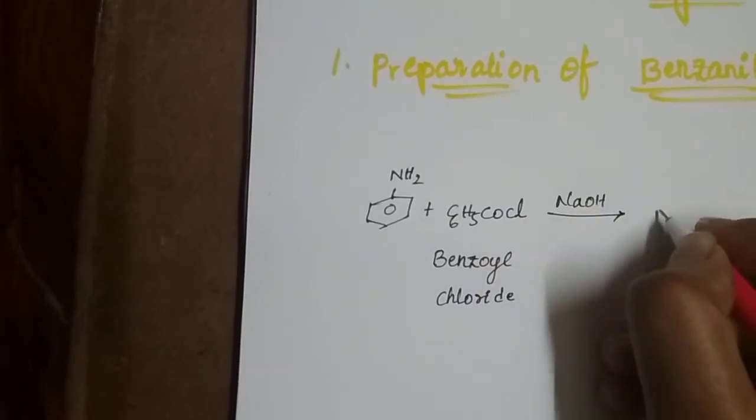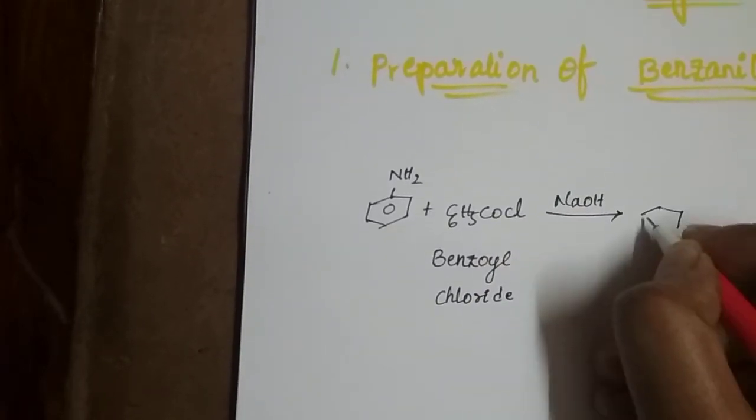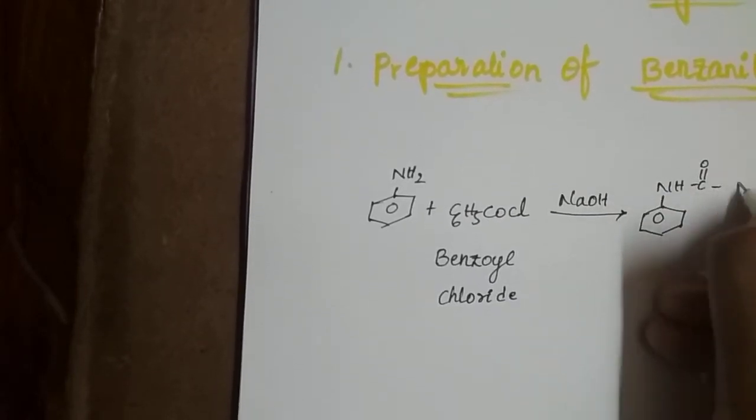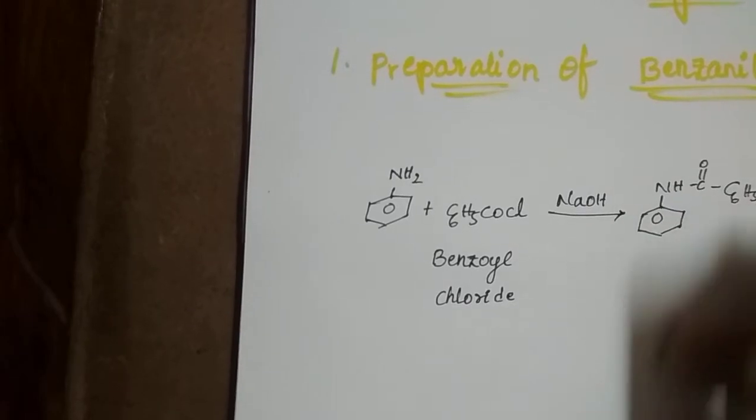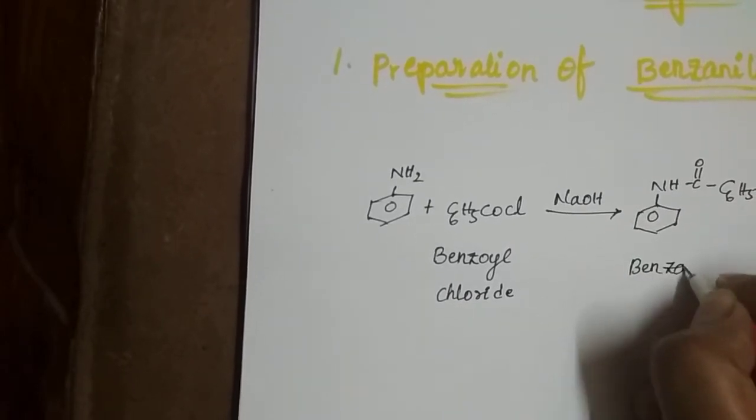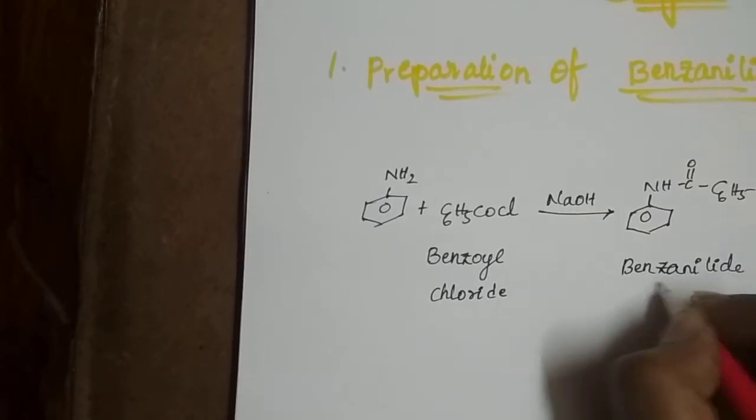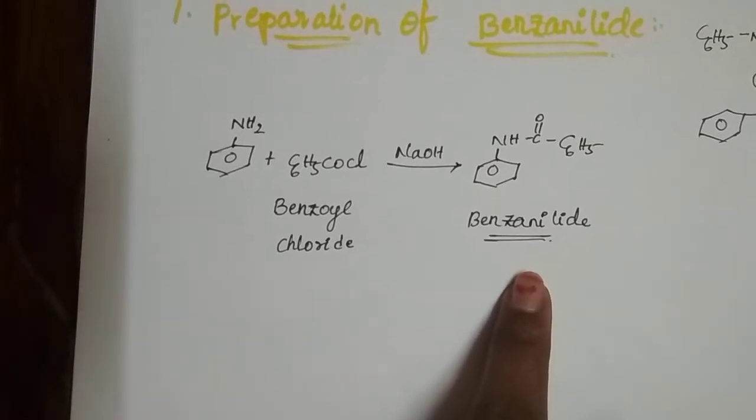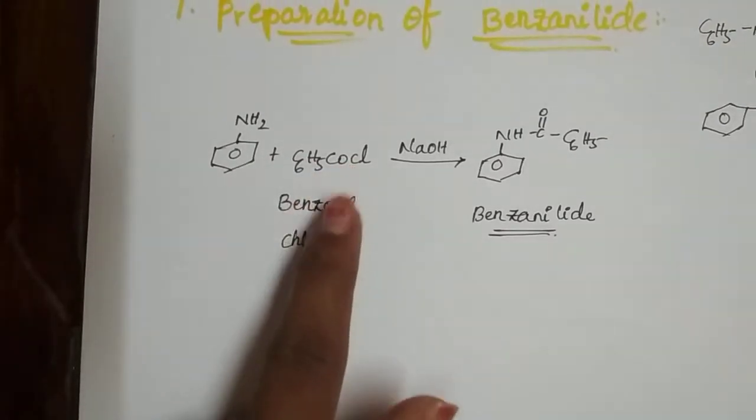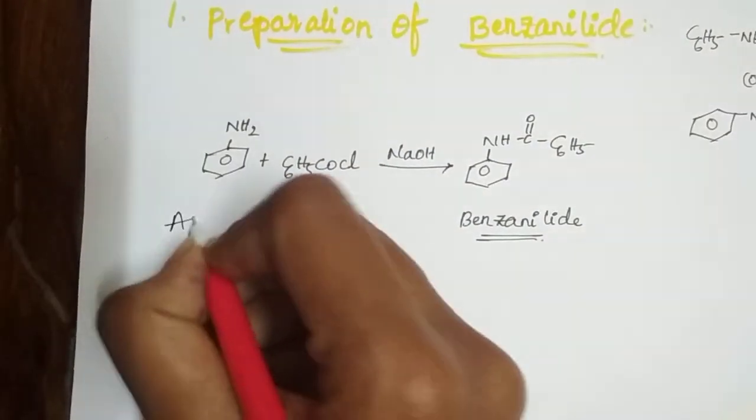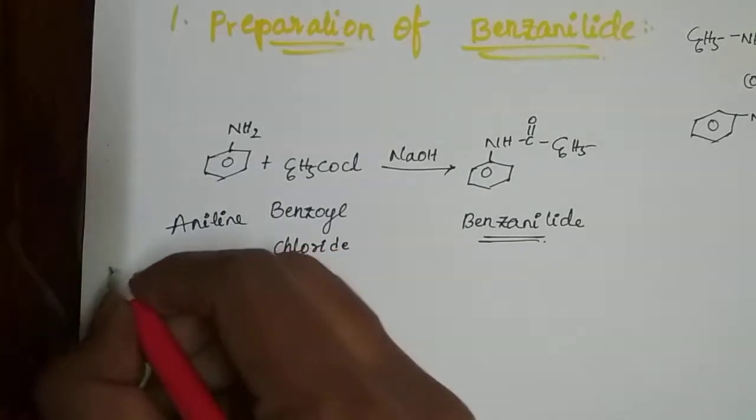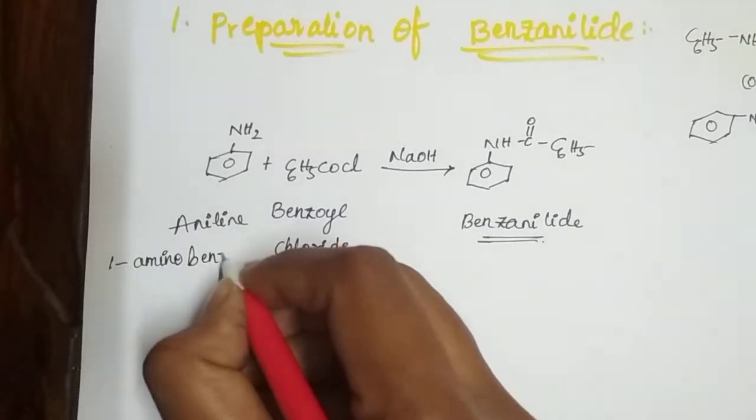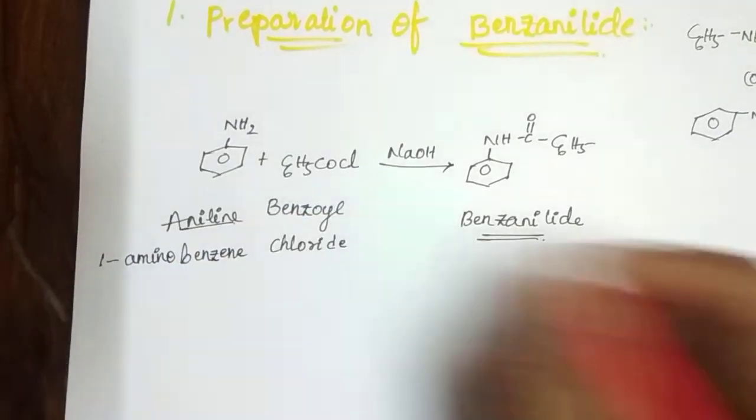...then we get Benzionylite. So it is the major product we get after the combination of aniline and benzoyl chloride. Aniline is also named as amino benzene.